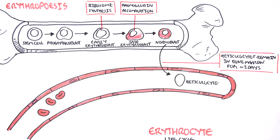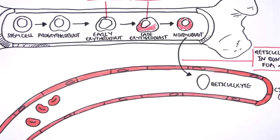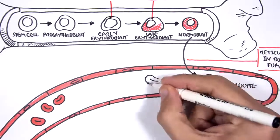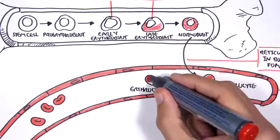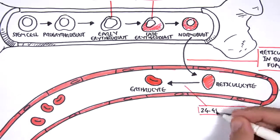A reticulocyte actually stays in the bone marrow for several days before entering circulation. And once entered into circulation, the reticulocyte, after about 1-2 days or 24-48 hours, it will mature and become an erythrocyte.